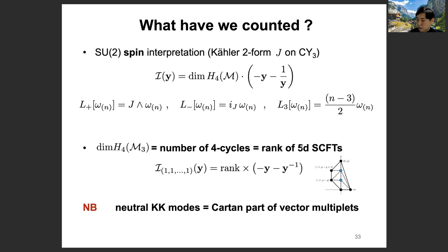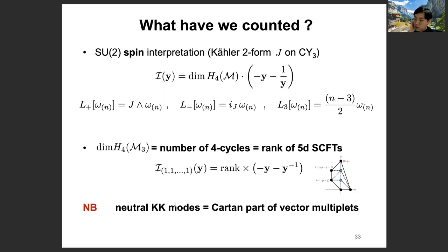One might ask, what is the physical interpretation? As I mentioned, the index of the (1,1,1,1) quiver represents nothing but neutral KK modes. The gauge theory that commutes with all Cartan generators is nothing but the Cartan itself. So this is nothing but the Cartan part of vector multiplets. It's natural that there are rank-many Cartan parts of the given gauge theory. The (1,1,1,1) quiver counts exactly that part — this is our physical interpretation of this cohomology computation.